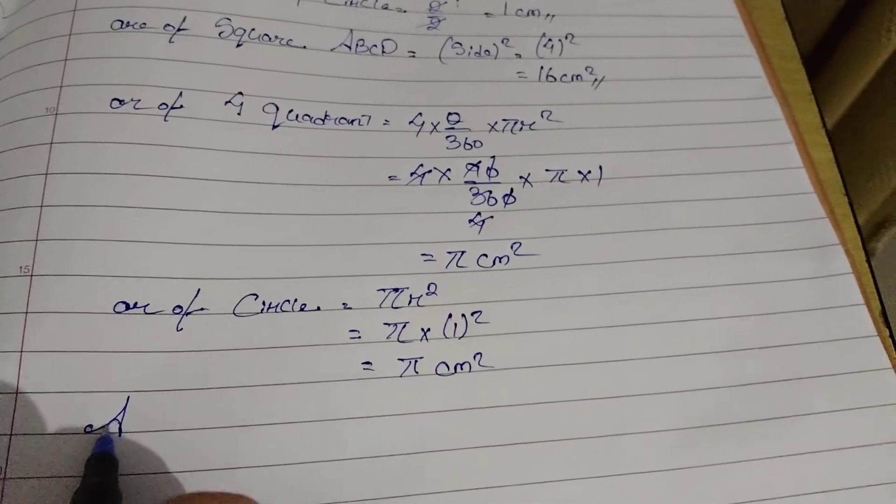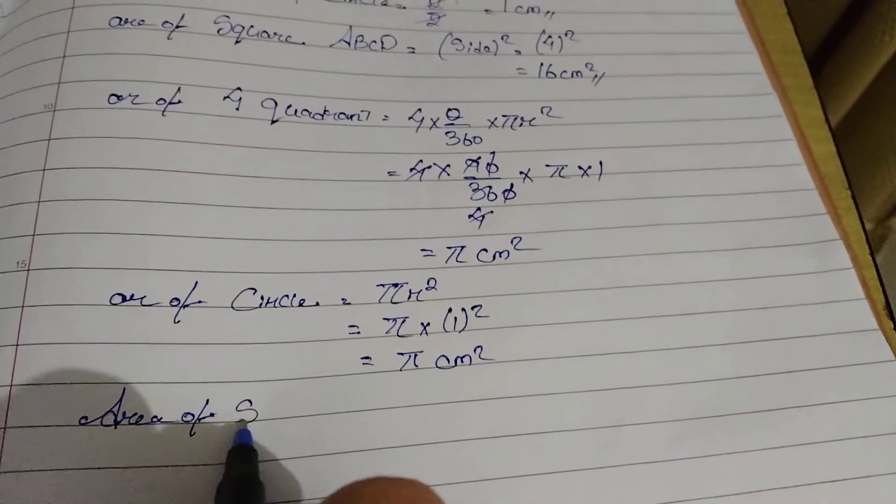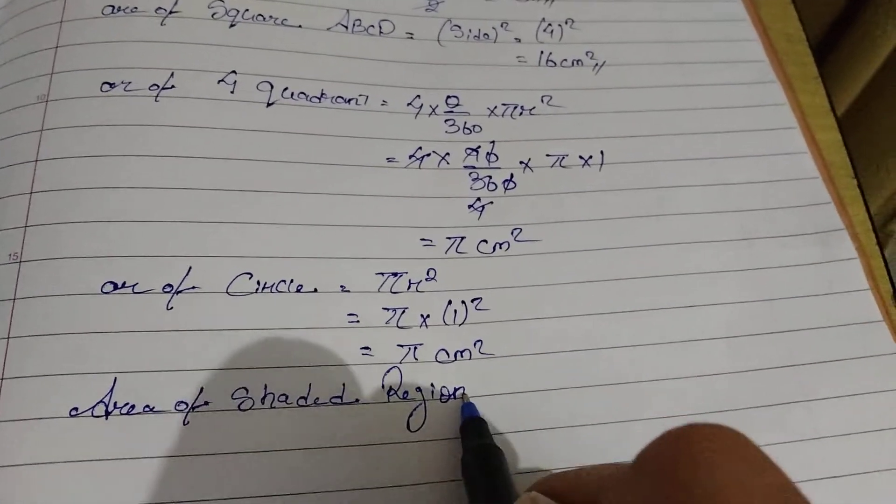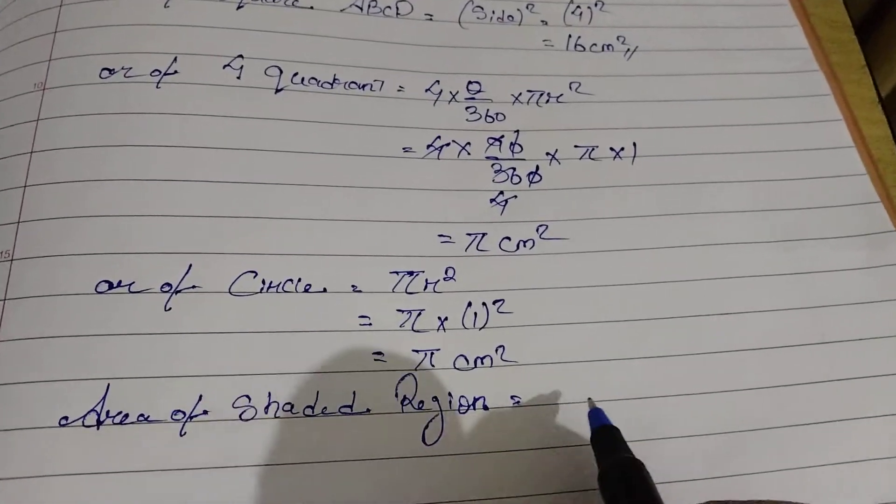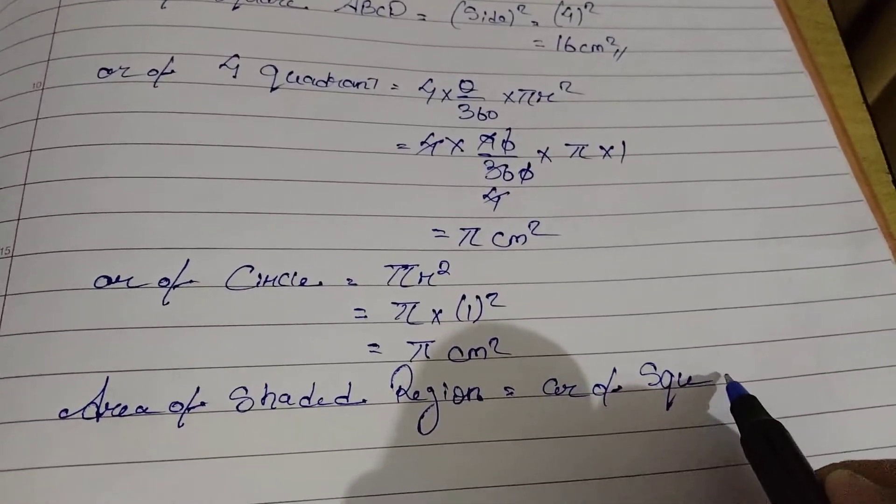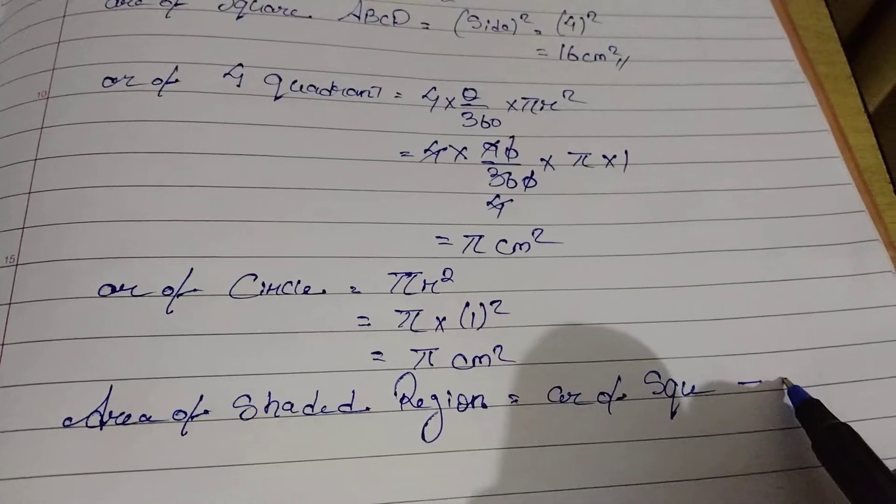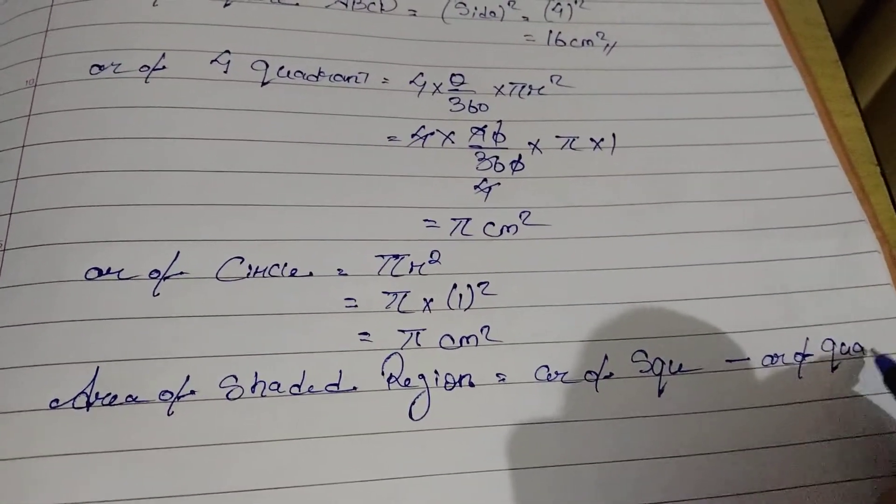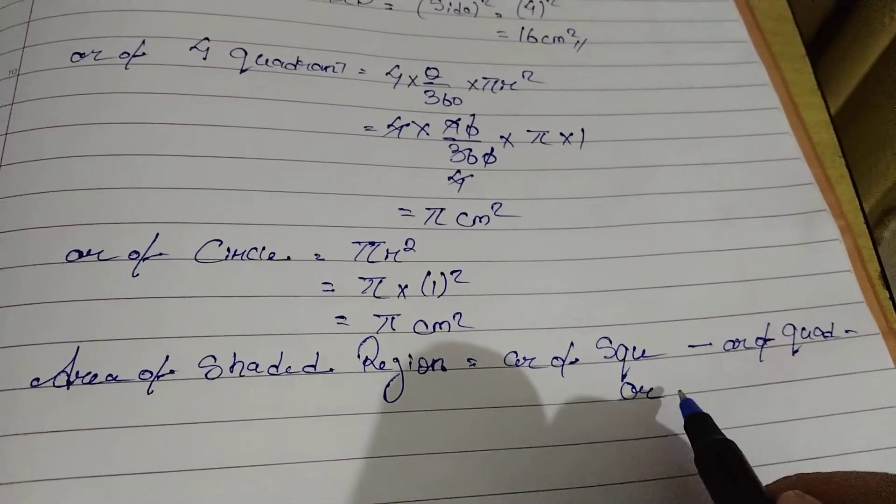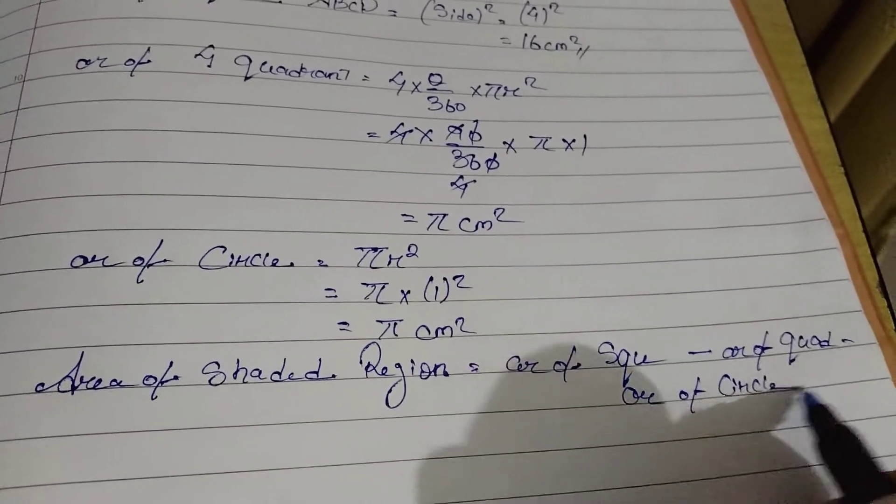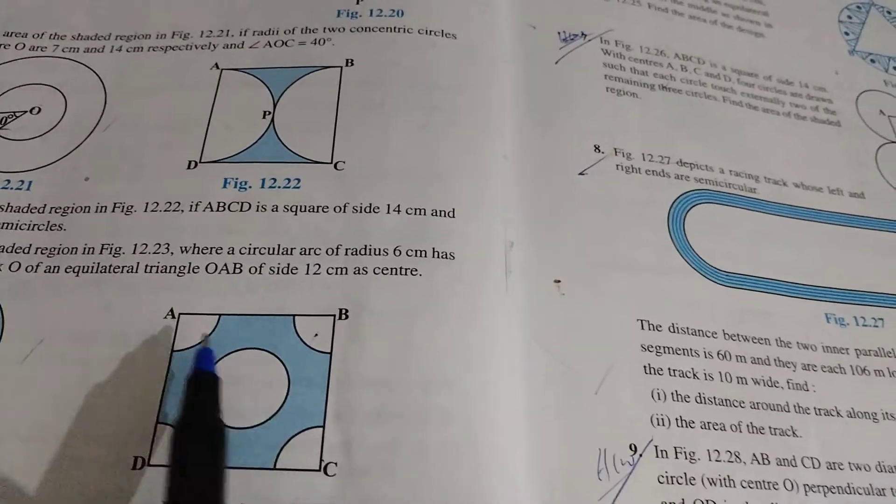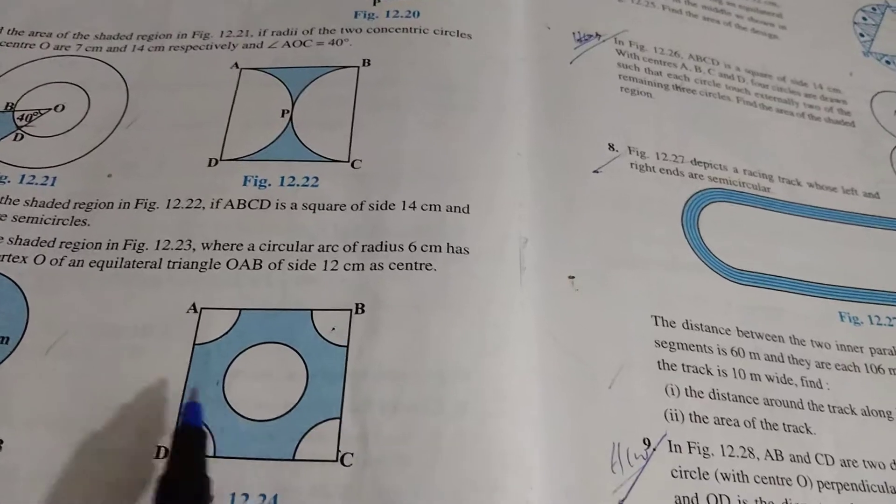Let's go for area of shaded region. We have to do area of square minus area of quadrant minus area of circle. In order to find the shaded region, we have the square, we minus the circle and the quadrant, then you will find the shaded region.